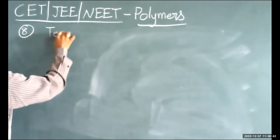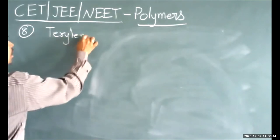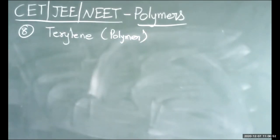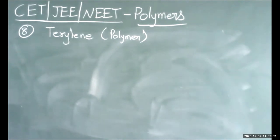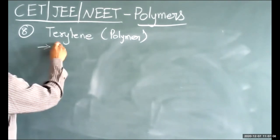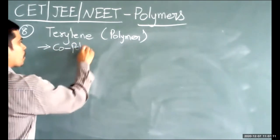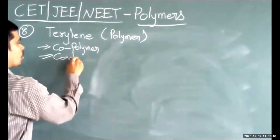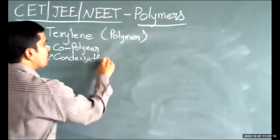Terylene is an example of a condensation polymer and also a copolymer. We can say it is a copolymer and a condensation polymer.